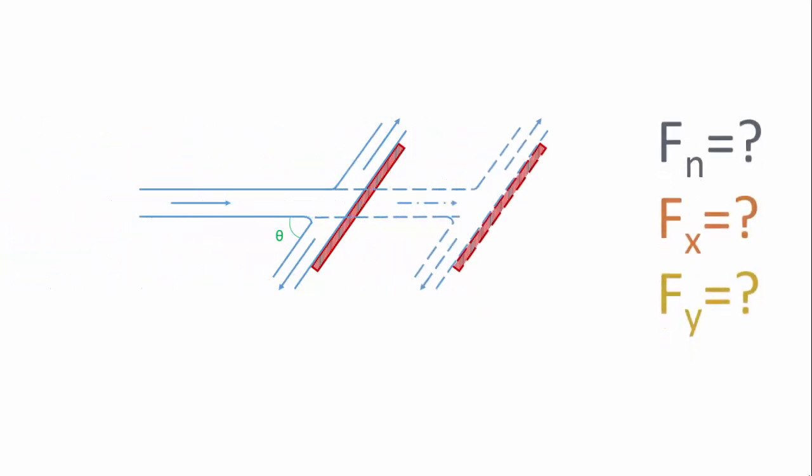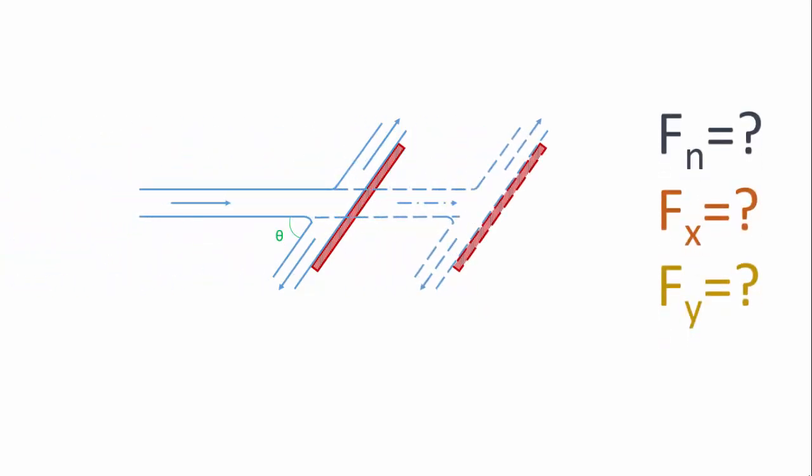Let's consider an inclined plate on which a jet of water is impinging. As the plate is assumed to be moving, three forces come into the picture: the force along the direction normal to the plate, force along the x direction, and force along the y direction.